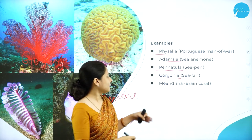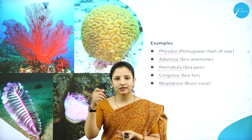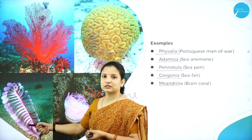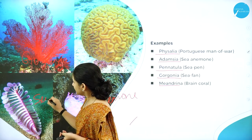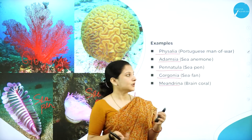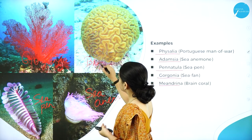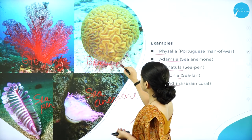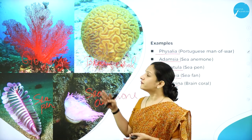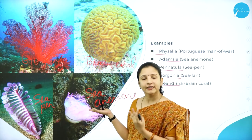Gorgonia is sea fan. And we also have Meandrina, which is brain coral. You can see here it looks just like a brain - that is why it is called brain coral. These are the different examples of Coelenterates. There is a vast amount of examples and few of them I have just mentioned here. This is a very beautiful phylum wherein you get to see a lot of aquatic forms of Coelenterates and Cnidarians.